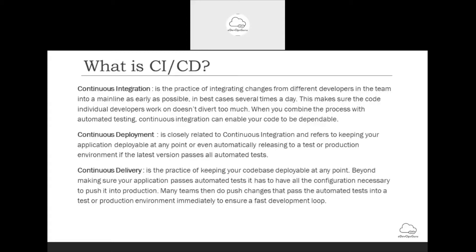Here CI — continuous integration — comes into picture. Right from when the developer pushes a change, different steps like compilation, unit testing, and static code analysis are taken care of, along with test reports and other things. This helps individual developers make sure that whatever they are checking in doesn't break anything on the main development or release branch. In layman's terms, it's automated testing, automated code compilation, and automated code coverage.